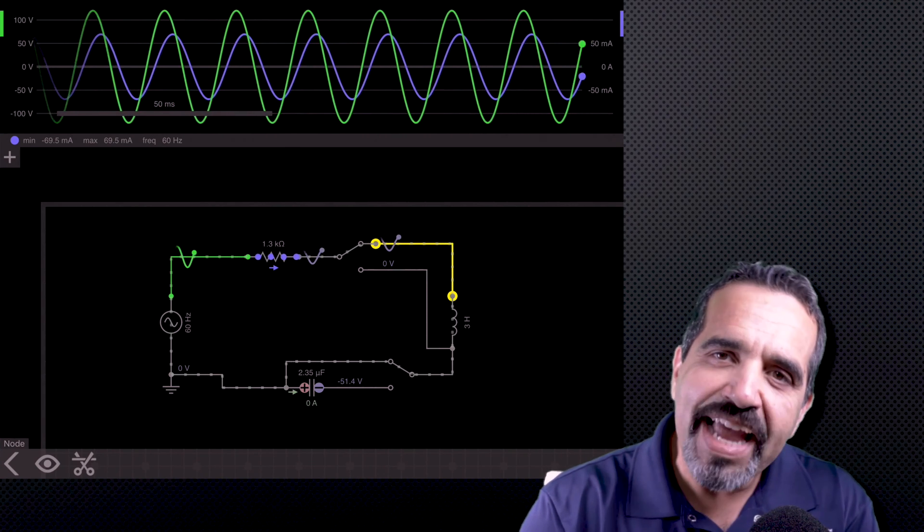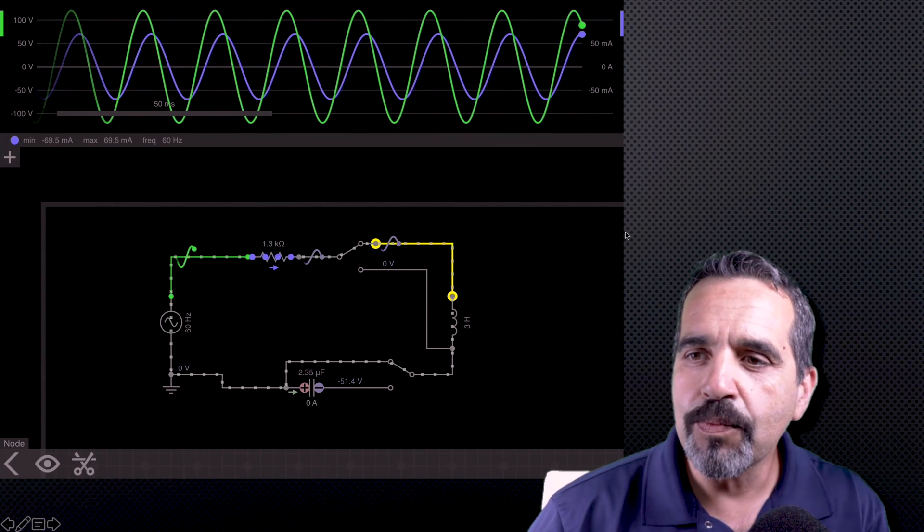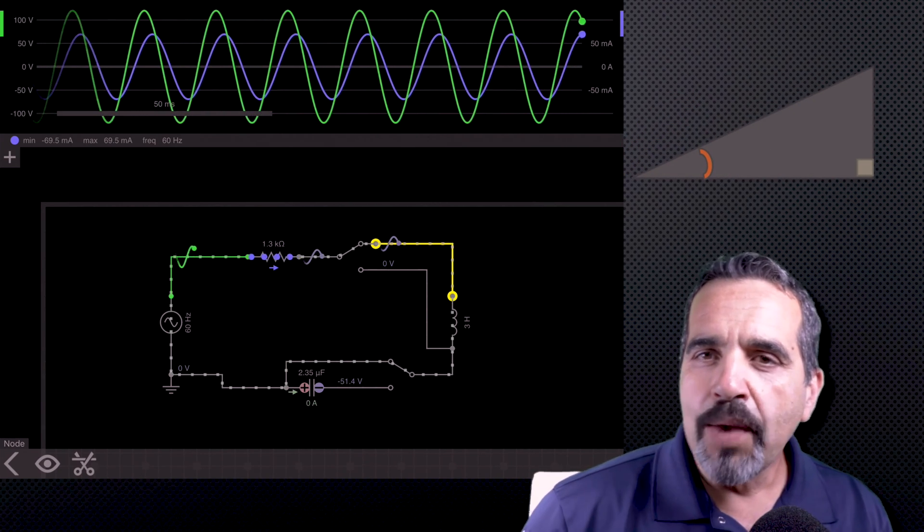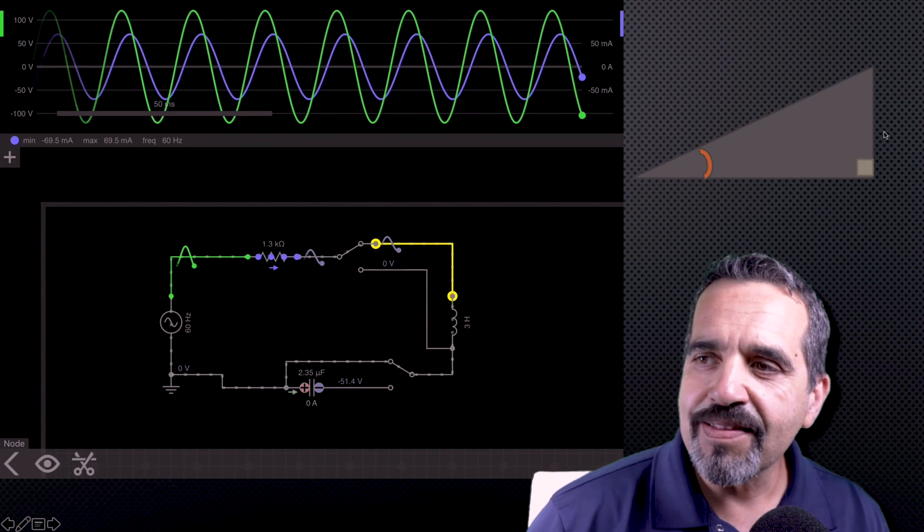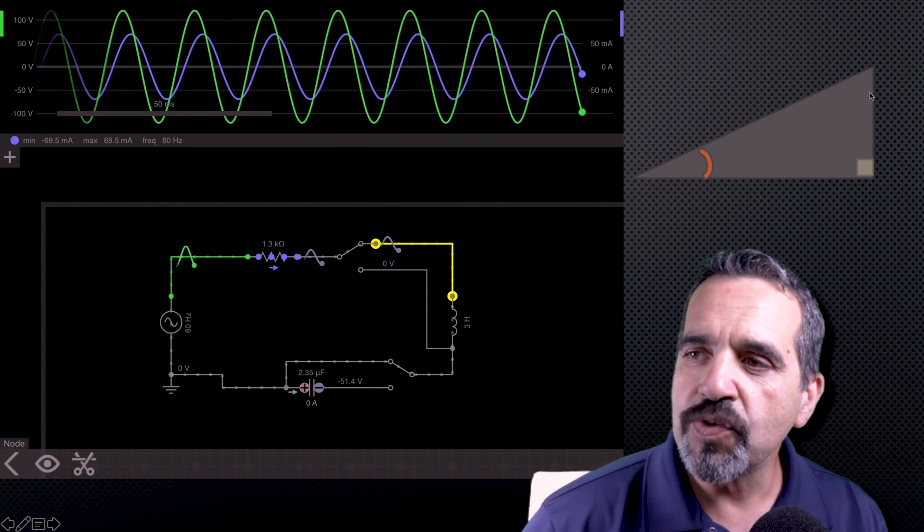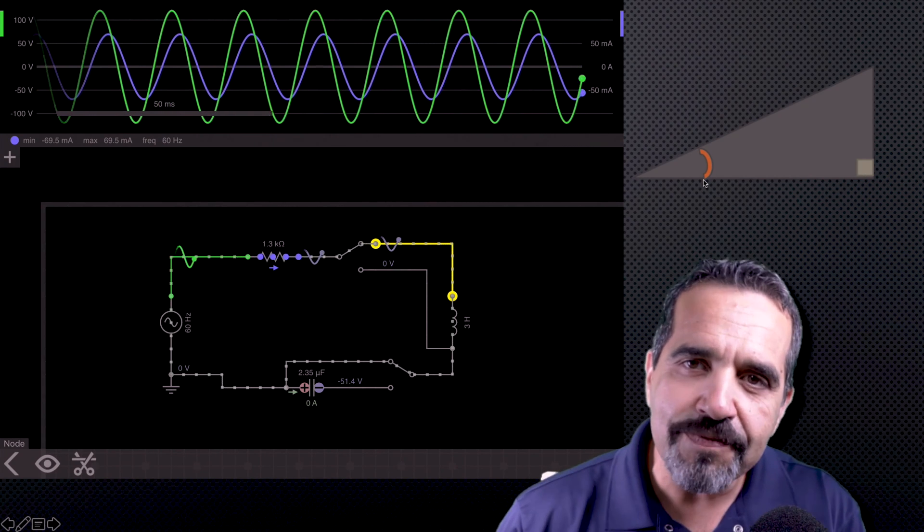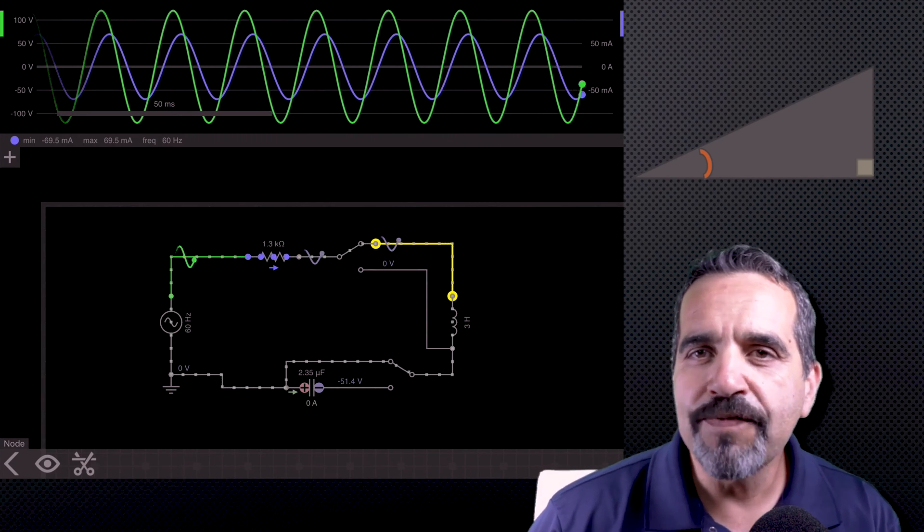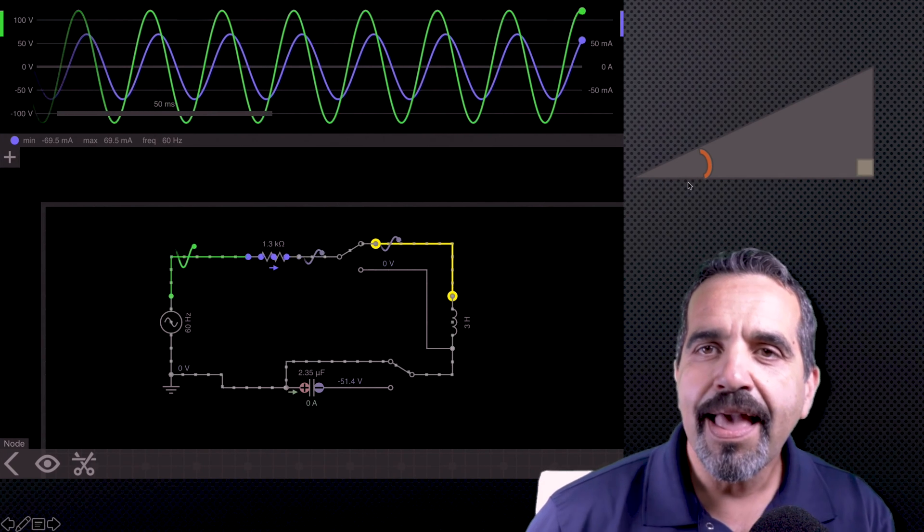So it is that phase shift that creates what we call power factor. And that's represented by a power triangle like this, a right angle triangle, where this would be our wattage. This would be our volt amperage. And it's this right here, which is the inductive reactance that's happening, which creates this shift. And this angle represents the amount of shift happening in our circuit.